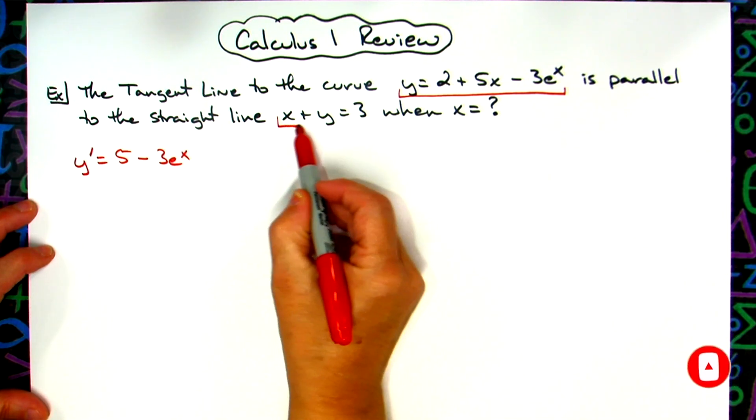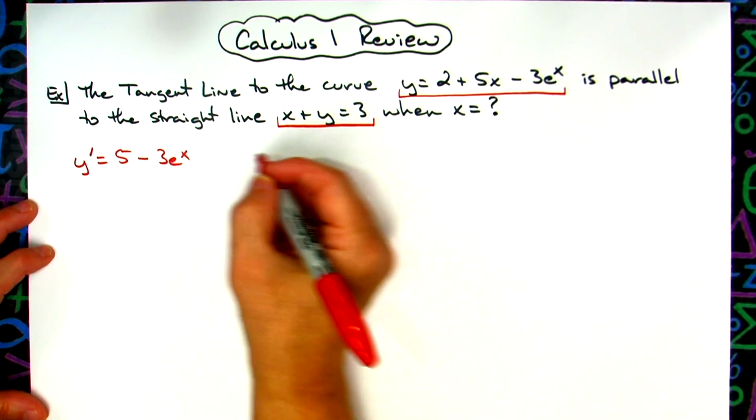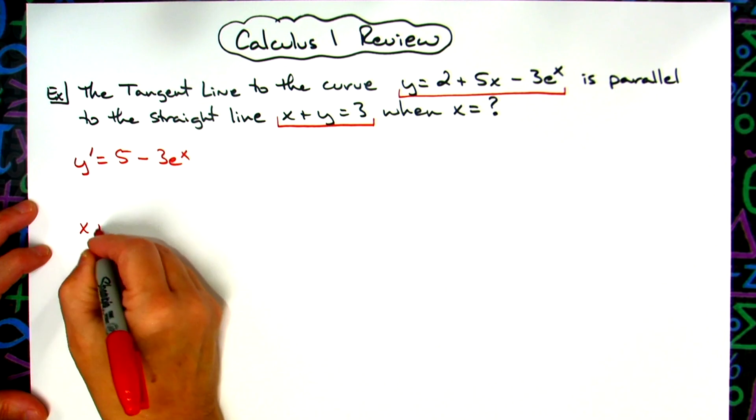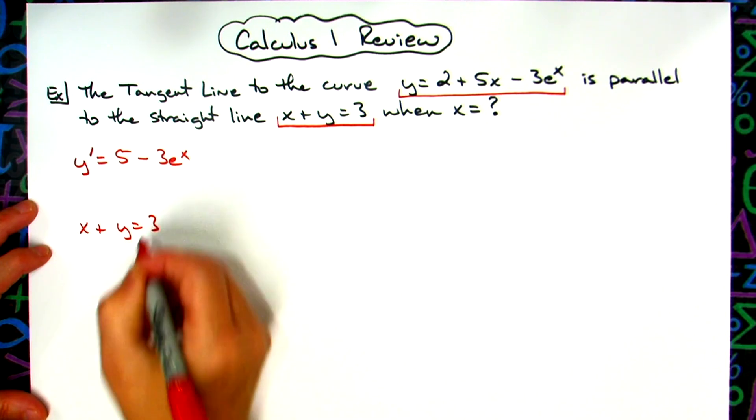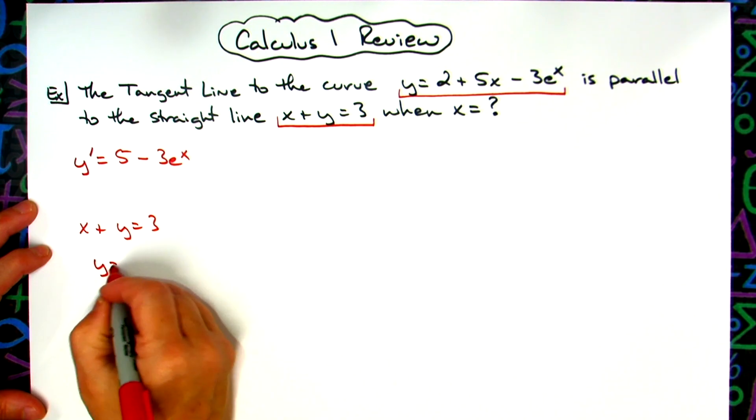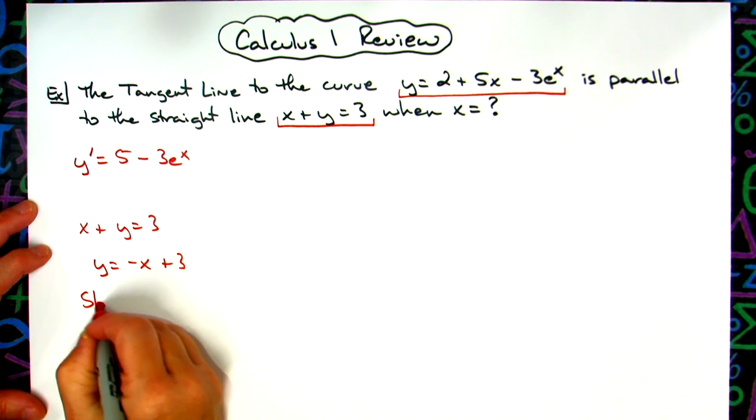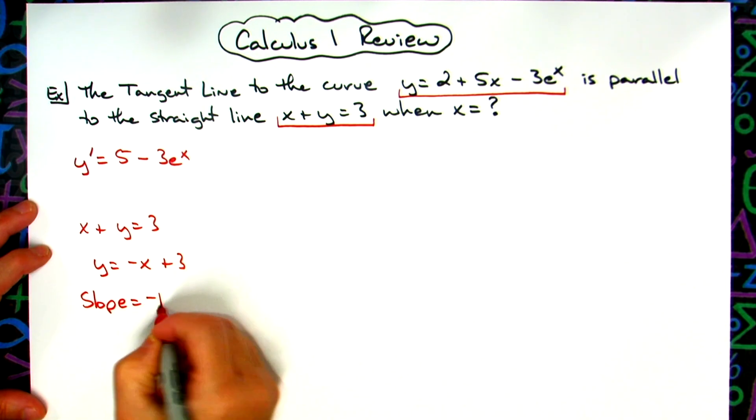Now we're going to take a look at this straight line and find the slope. So let's do x + y = 3. Probably the easiest way would be to put this into slope-intercept form. So we have y = -x + 3. That tells me that my slope is equal to -1.